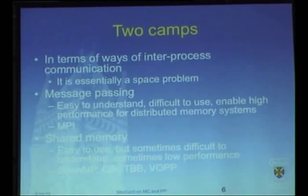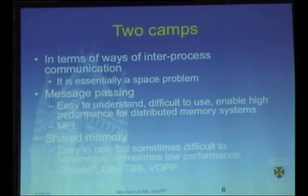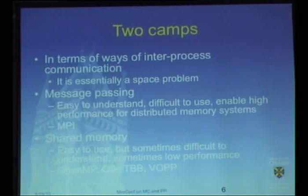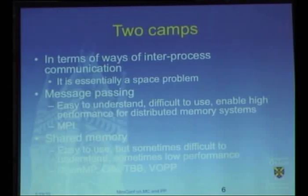Traditionally we have two camps: the shared memory model and the message-passing model. Message passing is easy to understand — you just pass messages — but it tends to be very difficult to use, especially as the number of processors increases. The shared memory model is relatively easy to use and straightforward; you just share everything. But it can produce difficult problems that are hard to understand, like data races and deadlocks, and sometimes delivers low performance.